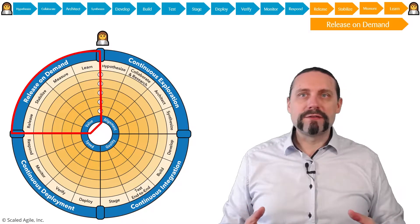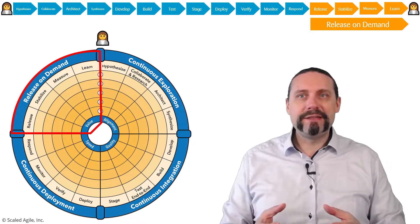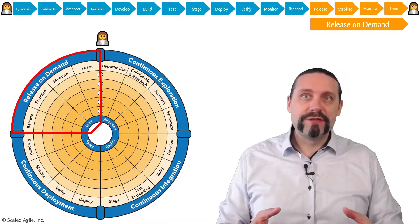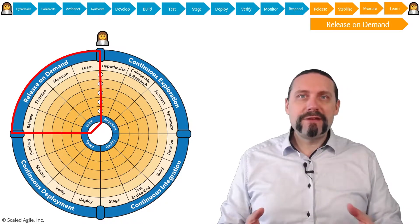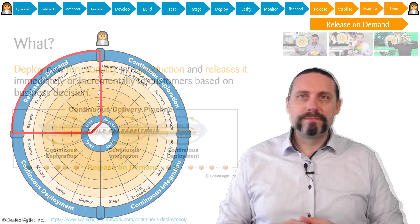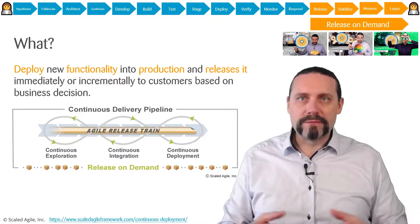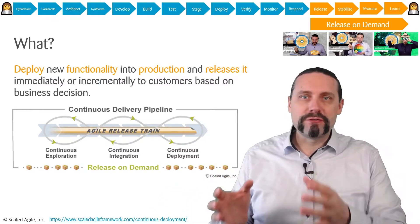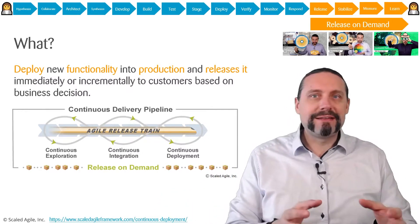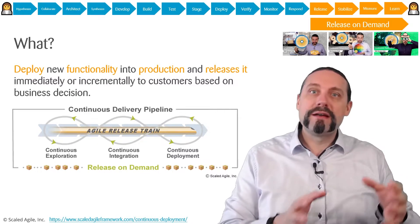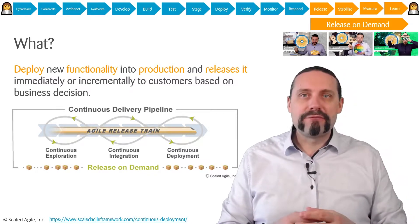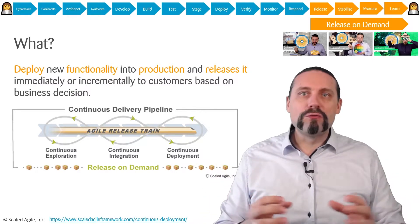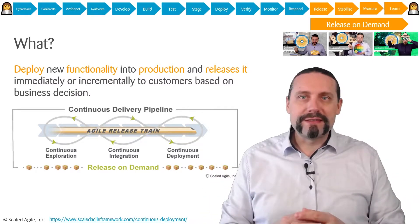Release on Demand consists of the activities: release, stabilize, measure, and learn. Before Release on Demand we have continuous exploration, continuous integration, and continuous deployment — and after that we have Release on Demand. This is the whole continuous delivery pipeline.